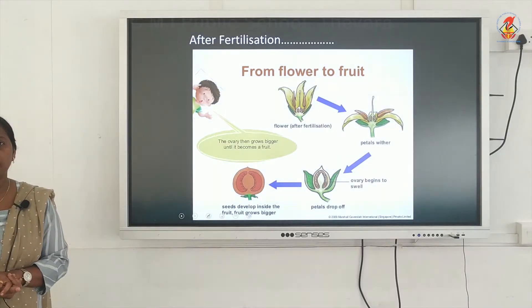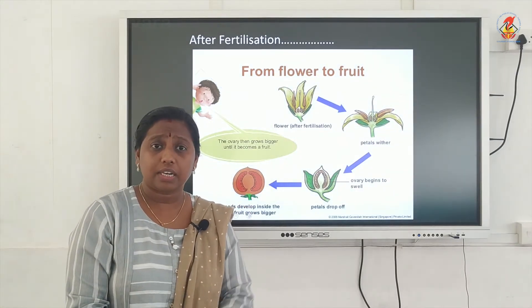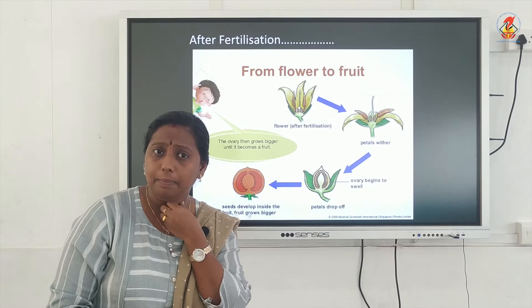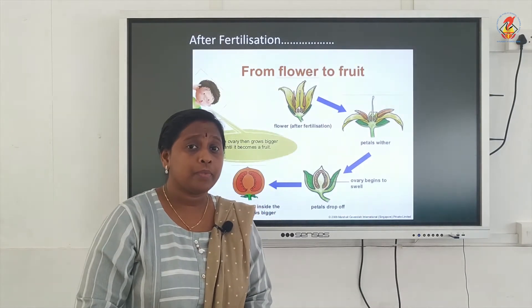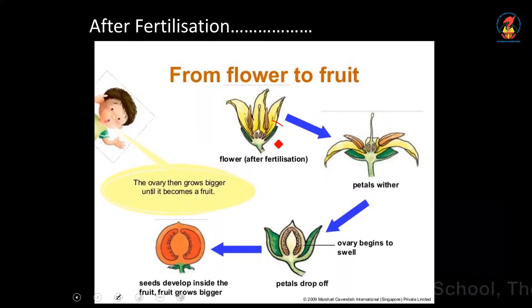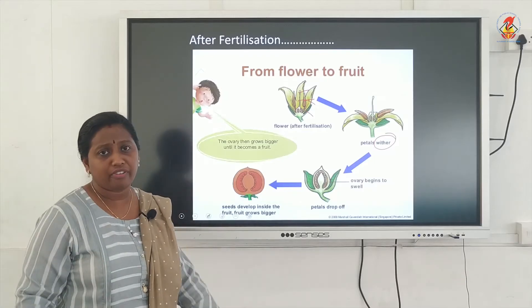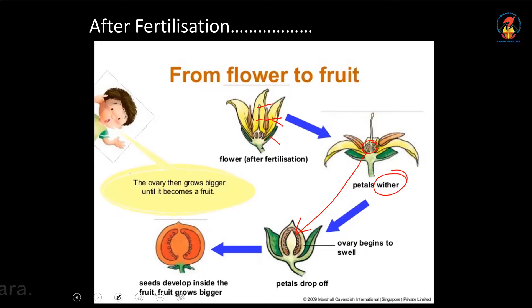Next we are going to see what happens in a flower after fertilization. The zygote is the product of fertilization — after fertilization the male and female gametes fuse to form a new cell called the zygote. Once the zygote is formed, some changes occur in the flower. The petals, sepals, stamen, stigma, and style — everything will just wither off and drop off from the flower. Meanwhile, the ovary becomes swollen and starts growing.